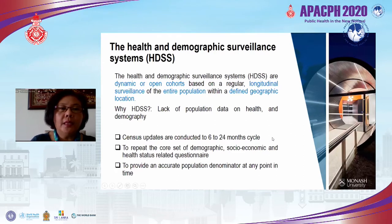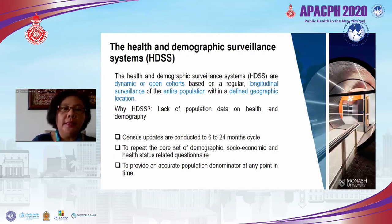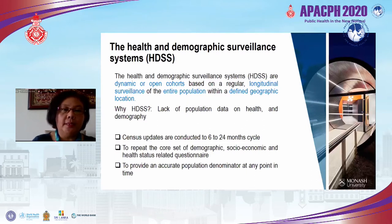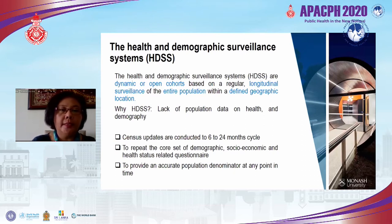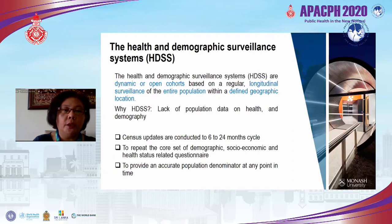I'd like to introduce what a Health and Demographic Surveillance System is, because many people still don't know. We call it HDSS. HDSS is a dynamic and open cohort based on regular longitudinal surveillance of the entire population within a defined geographic location. HDSS is set up because of a lack of population data on health and demography, particularly in low and middle income countries. It operates through census updates conducted in six to twenty-four month cycles, repeating a core set of demographic, socioeconomic, and health status data, providing an accurate population denominator at any point in time.